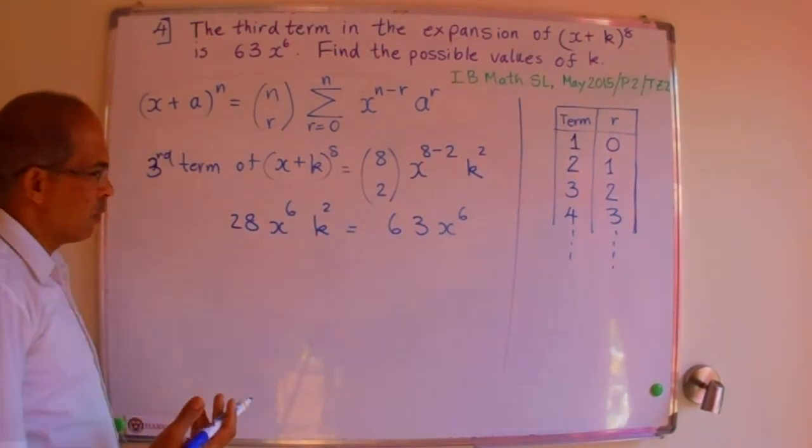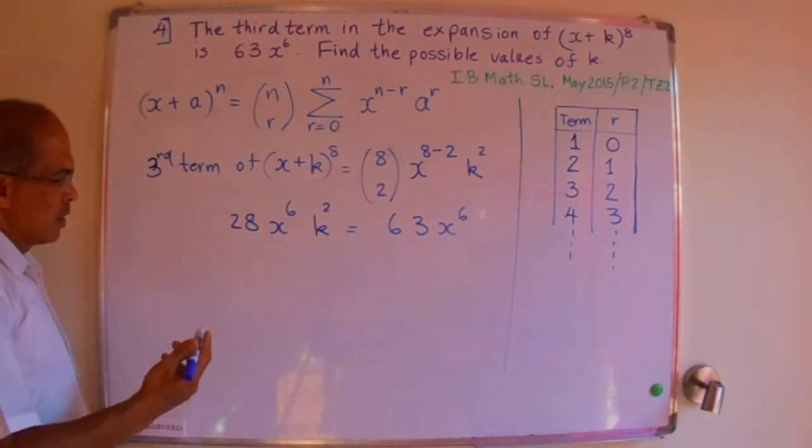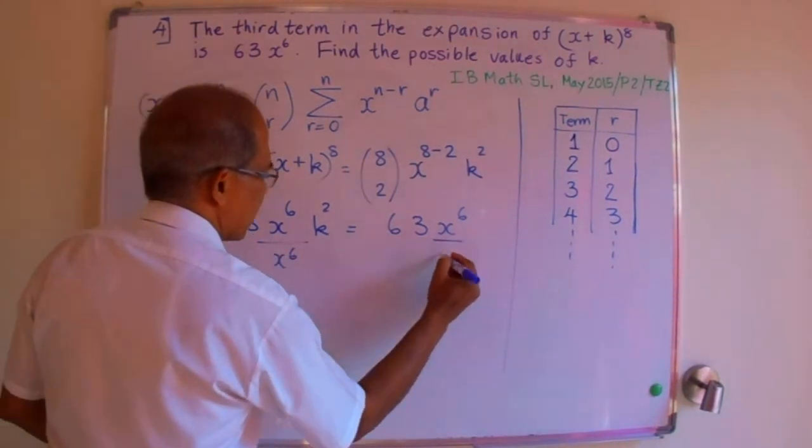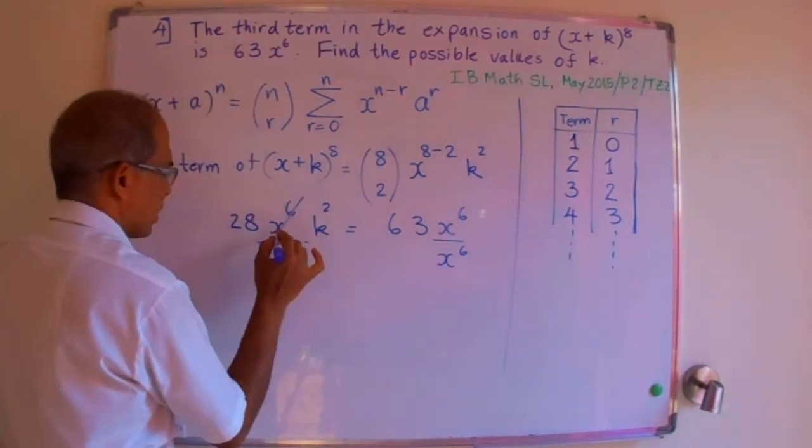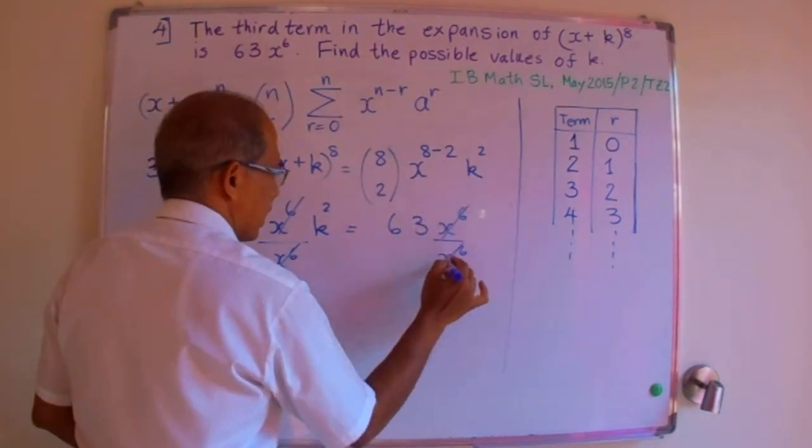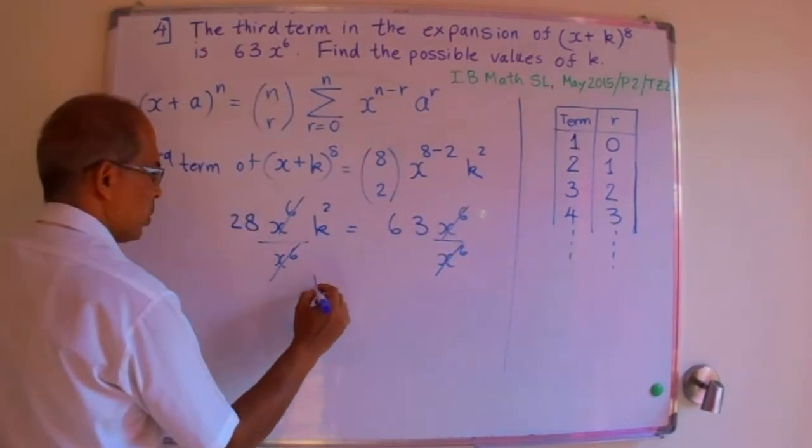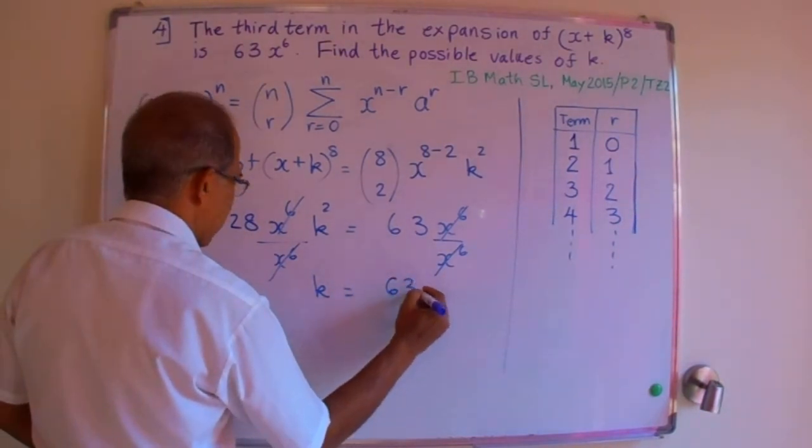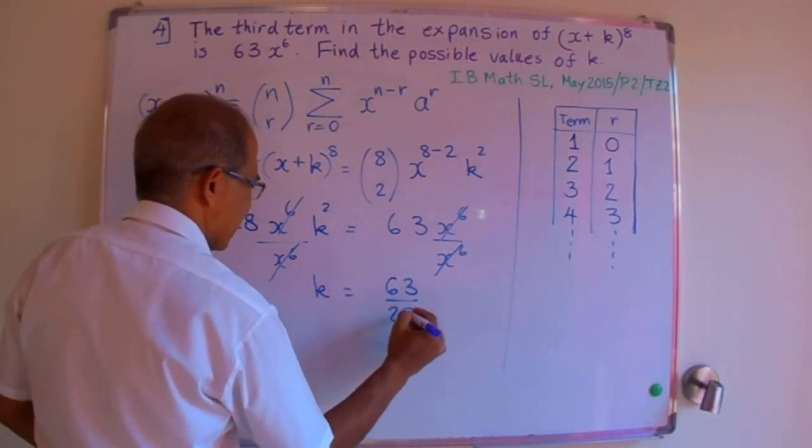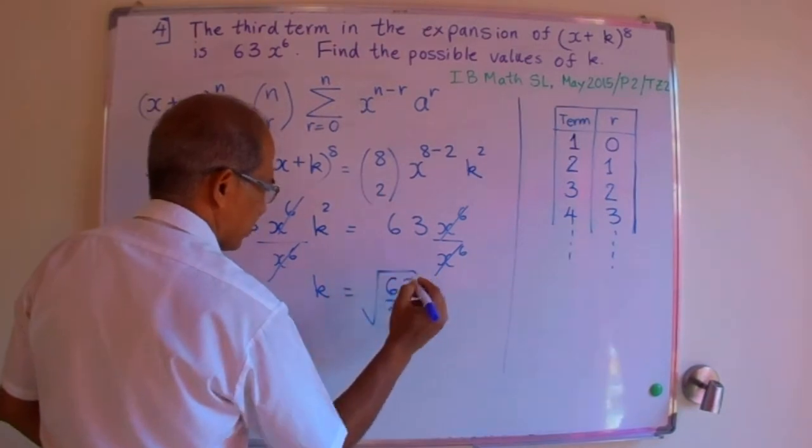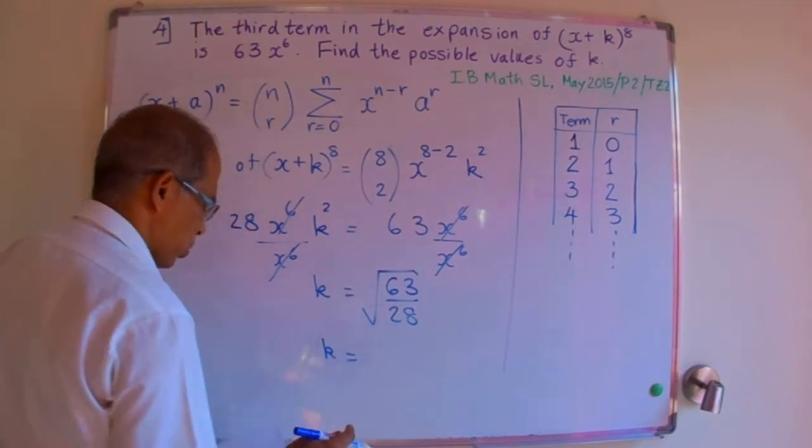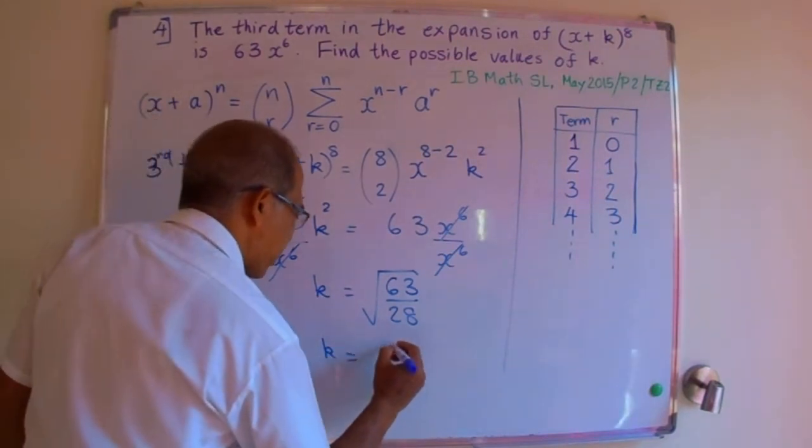Now we go on to solving for k. Divide both sides by x to the power 6, since there's an equal term on both sides, and it's multiplied, so they cancel out. We're giving you k is equal to 63 by 28 under the square root. Use your graphing calculator to find the answer to this, and your answer will be 1.5.